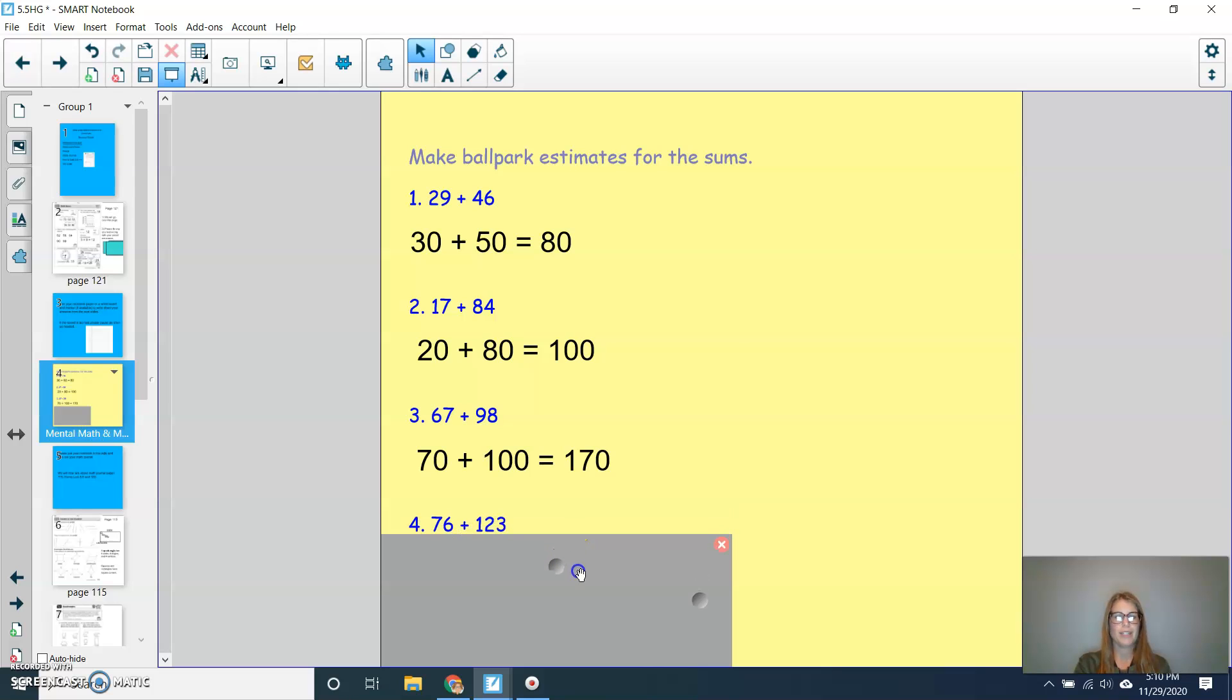We'll try one more. Can you round 76 to the nearest 10? And then will you also round 123 to the nearest 10? So you want to think, is this closer to 120 or closer to 130? Press pause and play to check. All right, so we know that 76 would round to 80 plus 123 is going to round to 120. 80 plus 120 would equal 200. We will work more on ballpark estimates in later lessons.